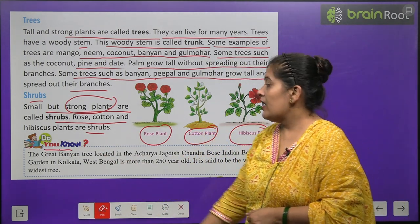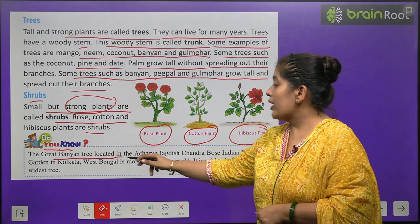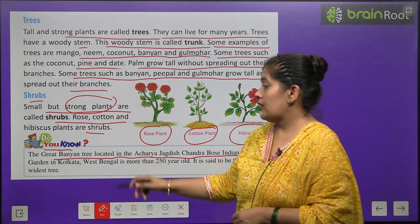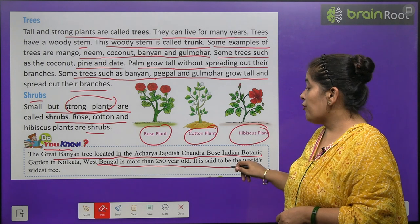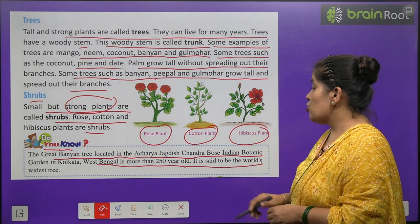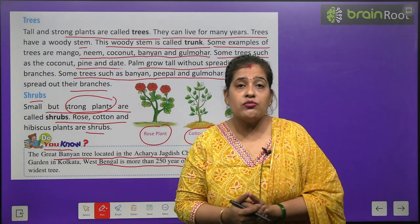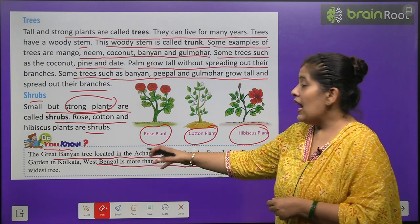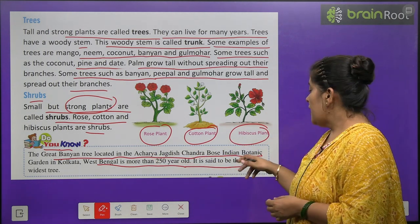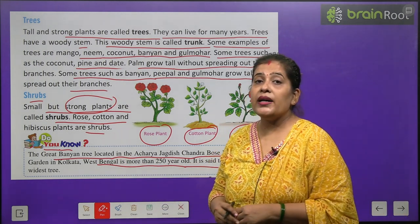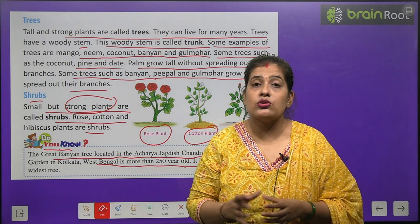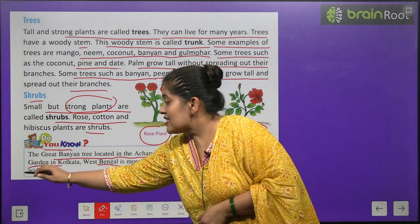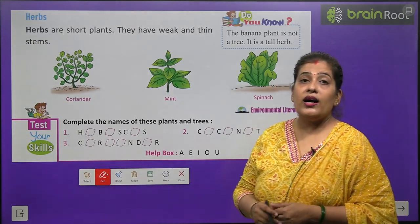Do you know — kya aap jaante hain? The great banyan tree located in the Acharya Jagdish Chandra Bose Botanic Garden in Kolkata, West Bengal is more than 250 years old. It is said to be the world's widest tree. Yeh 250 saal purana banyan tree hai jo Kolkata mein hai, jise hum world ka wildest tree bhi kehte hain.